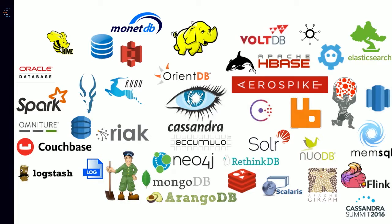Over the past probably 10 to 15 years or so, we've seen an explosion in the number of data systems that people are using. A lot of this is a result of traditional relational databases not necessarily serving a bunch of use cases very effectively. Cassandra is a big part of that — it's at the forefront of the NoSQL database push. The problem is that now we have tons of different systems and our data is spread all over the place.